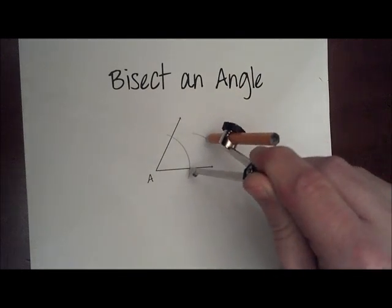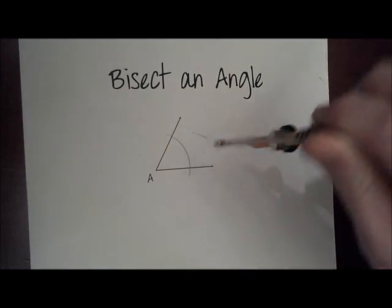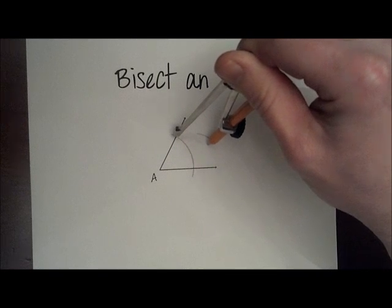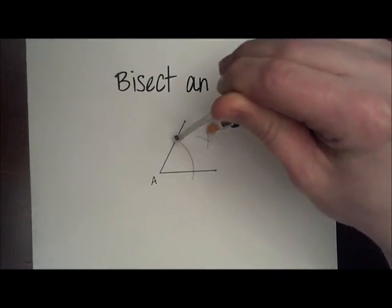Basically, it's going to be an arc from this point of intersection, and the same arc from this point of intersection without changing the compass setting.